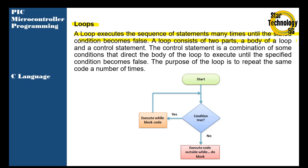A loop consists of two parts: a body of a loop and a control statement. The control statement is a combination of some conditions that direct the body of the loop to execute until the specified condition becomes false. The purpose of the loop is to repeat the same code a number of times.